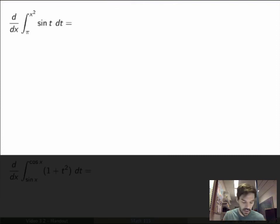I can't use the FTC directly, because the upper limit of integration is not x. The upper limit of integration here is itself a function of x, it's x squared. So in other words, this thing here is a function of a function of x. So what do I do when I want to evaluate the derivative of a function of a function of x? I use the chain rule. So let's do that explicitly.